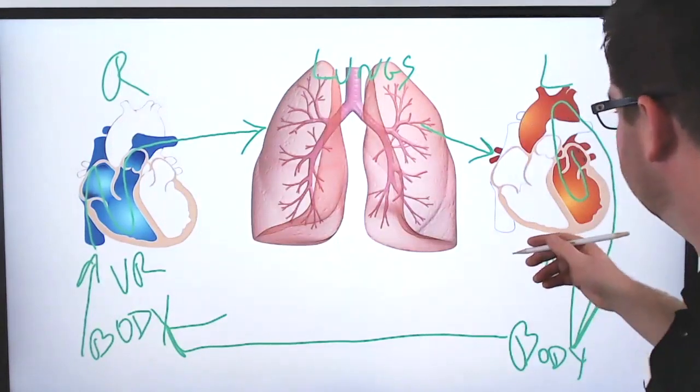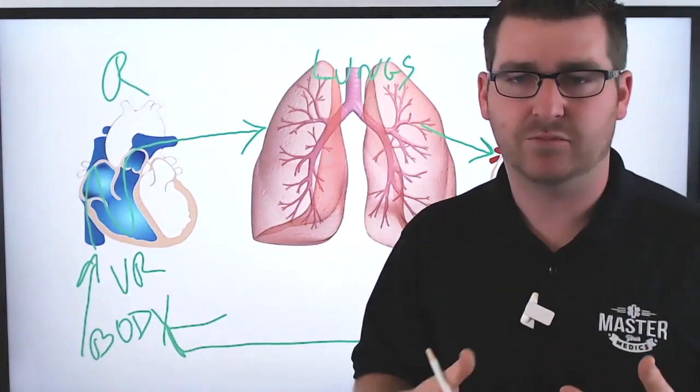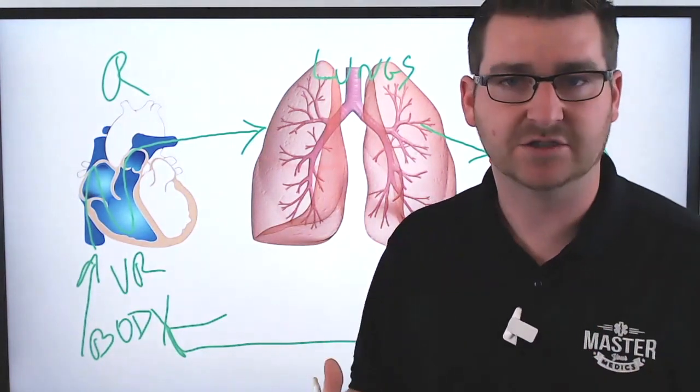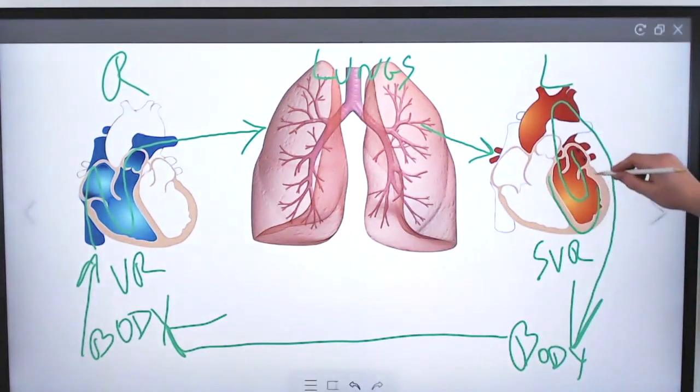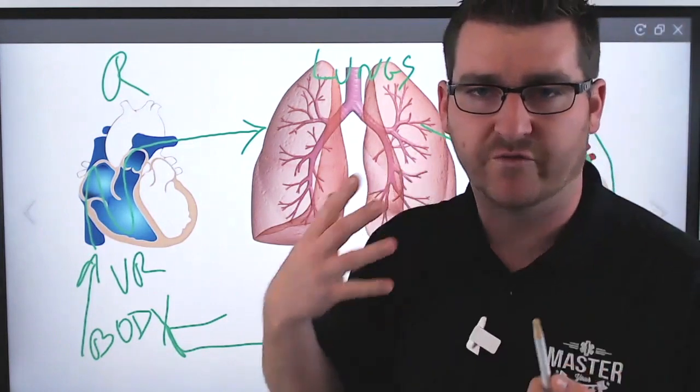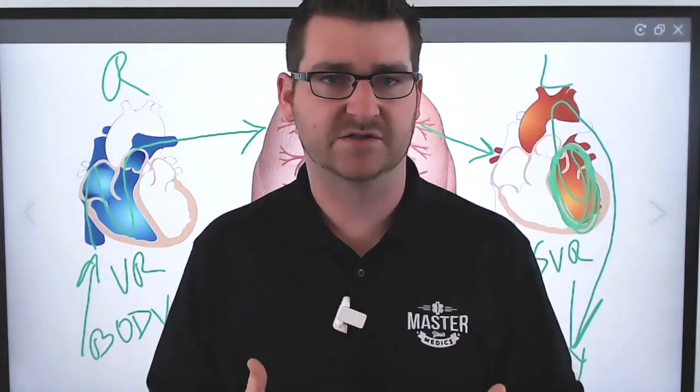Now, in a patient who has chronic PVD, peripheral vascular disease, a patient has chronic hypertension, stuff like that, the left wall of the heart will increase in musculature because it's trying to overcome that excessive SVR.